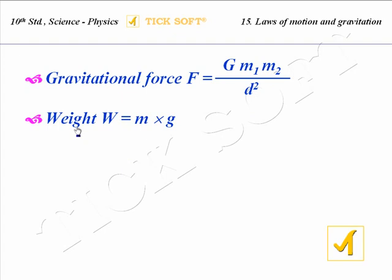Then weight W is equal to m into g. Here m is the mass of an object and g is the acceleration due to gravity. The acceleration due to gravity g is equal to 9.8 meter per second square.